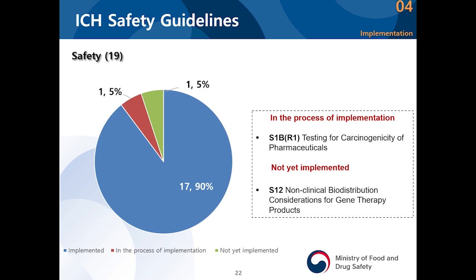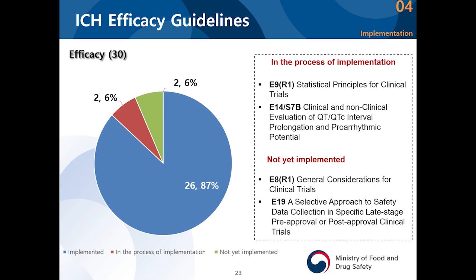Because gene therapies are being developed actively, the biodistribution guidelines are required. However, the relevant units are still only discussing them instead of fully implementing them. In terms of efficacy, this includes E9. My own division is in charge of E9 — there are no amendments to be made to E9 itself, but R1 has been added. E9R1 is a statistical guideline. We are adjusting the content along with experts and currently establishing guidelines to have them implemented. We believe implementation will be complete by December this year.